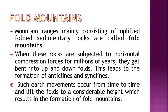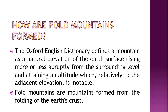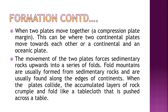Such earth movements lift the folds to a considerable height, resulting in fold mountains. Fold mountains are formed from the folding of the earth's crust when two plates move together at a compression plate margin — either two continental plates or a continental and an oceanic plate. The movement forces sedimentary rocks upwards into a series of folds. Fold mountains are usually formed along the edges of continents, where the thickest deposits of sedimentary rock accumulate.